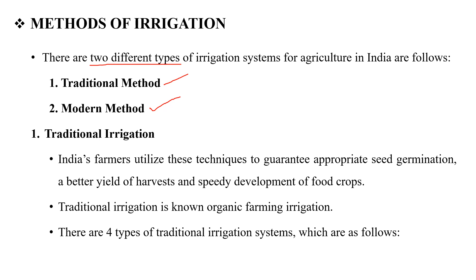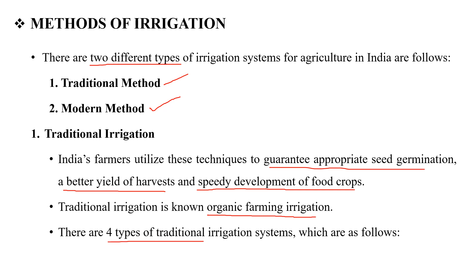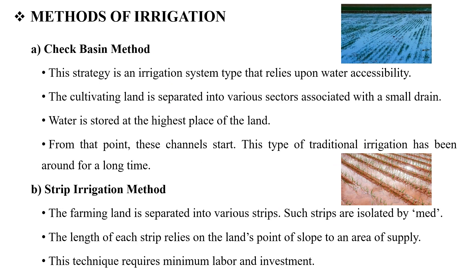Traditional irrigation is used by Indian farmers for seed germination, harvesting time, and better yield. The first classification of traditional irrigation is the check basin method. In this method, the land is divided into separate sections with small drainage provided between them. Water is filled up to the highest point at the surface within each section.